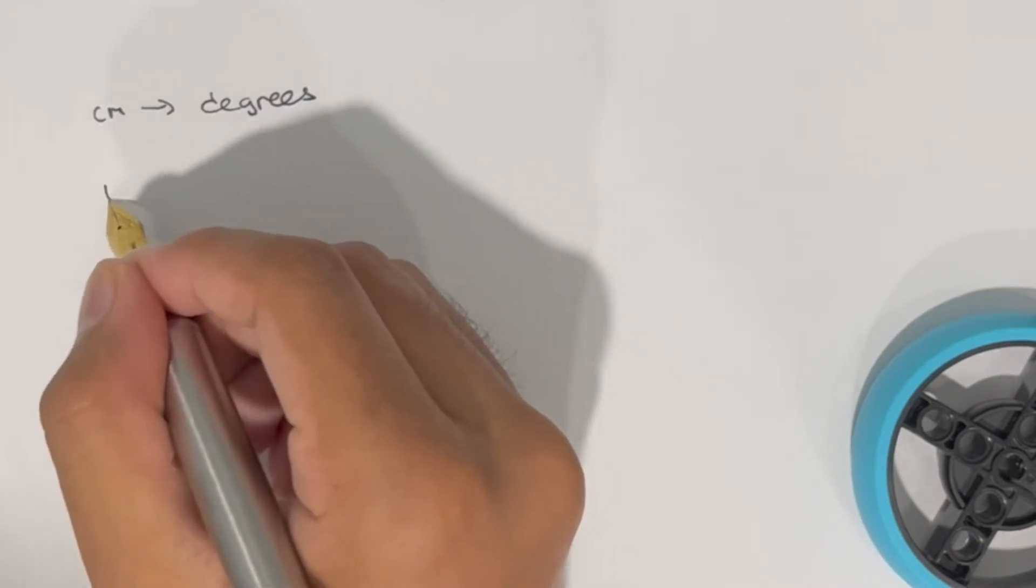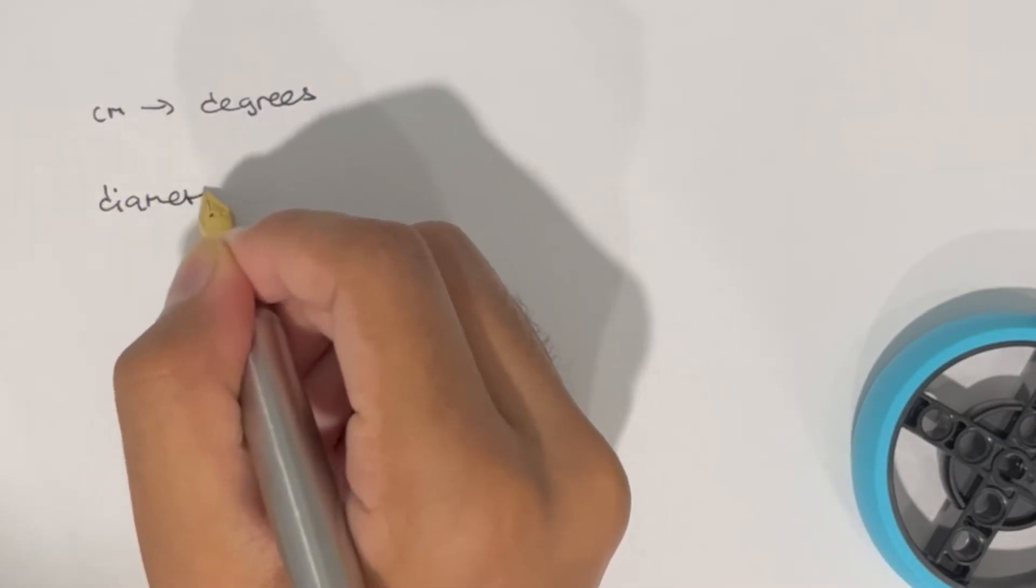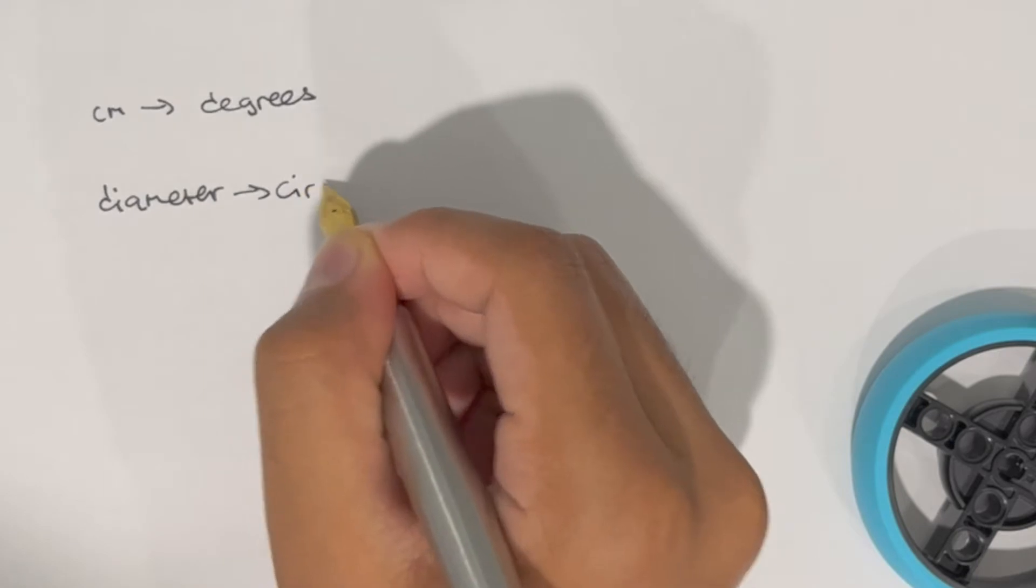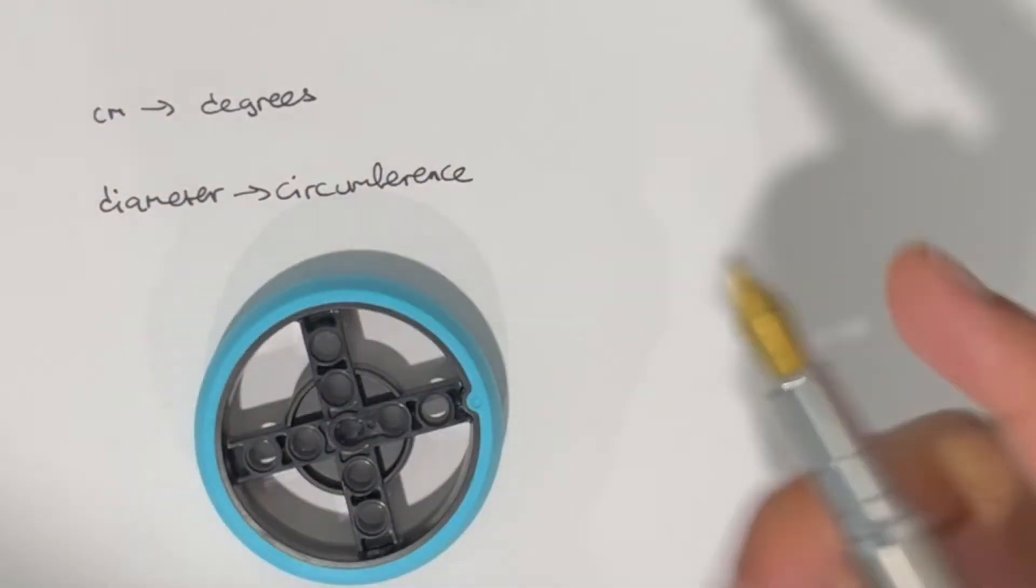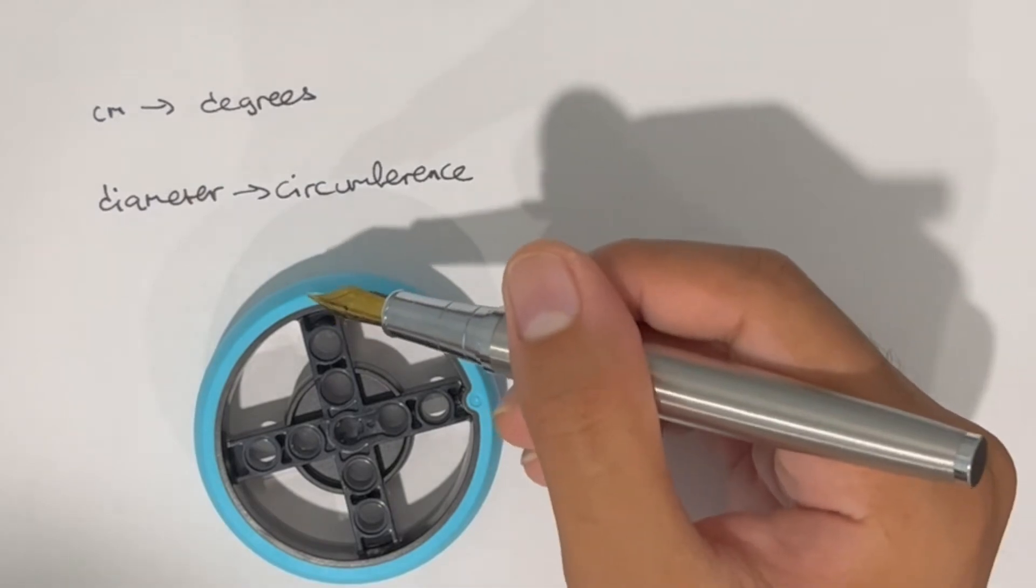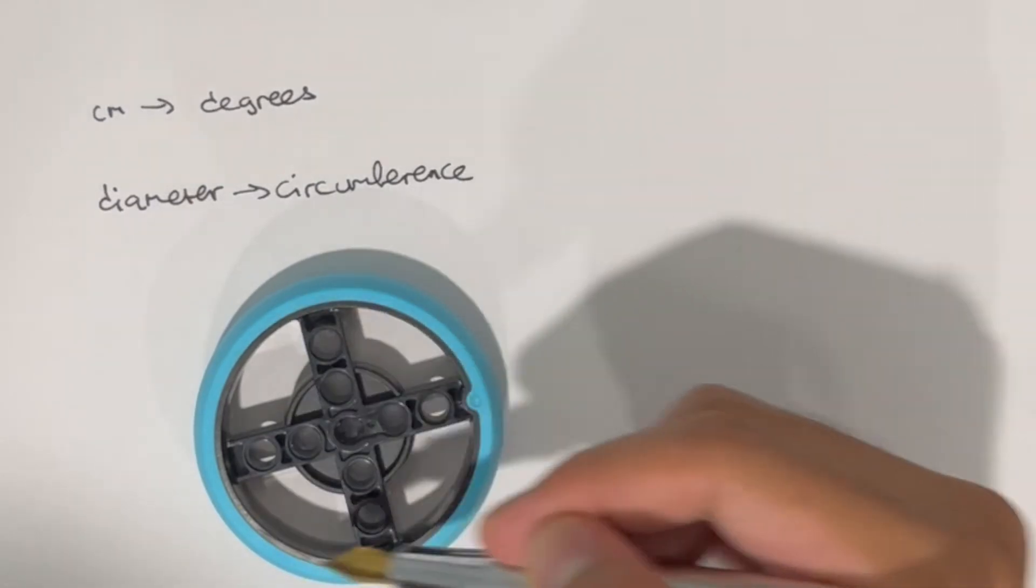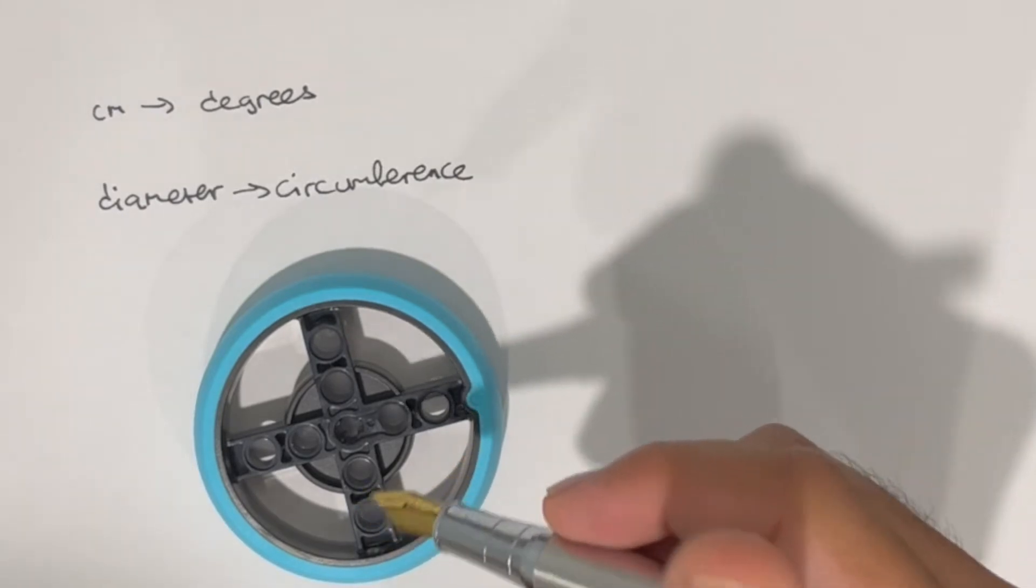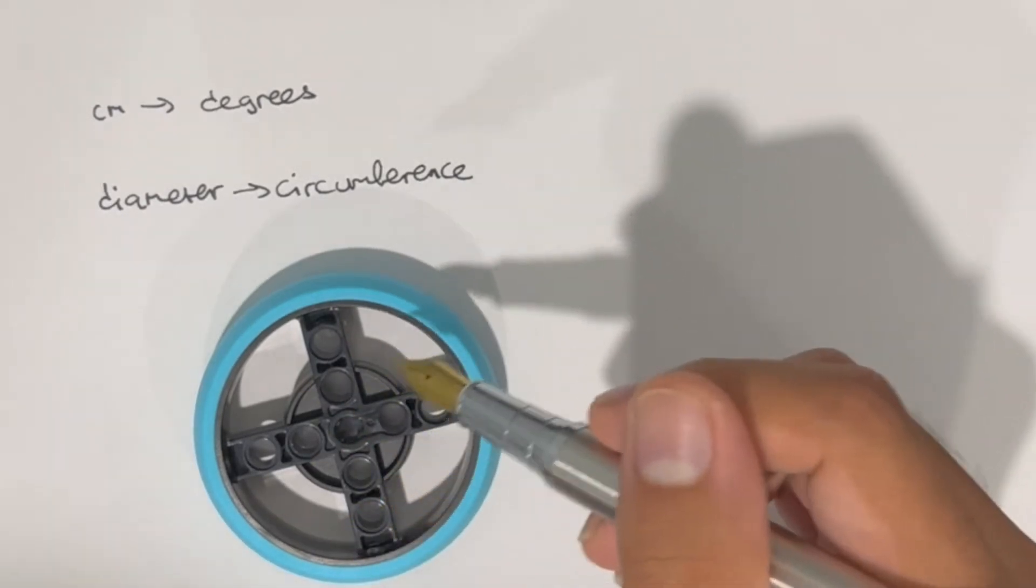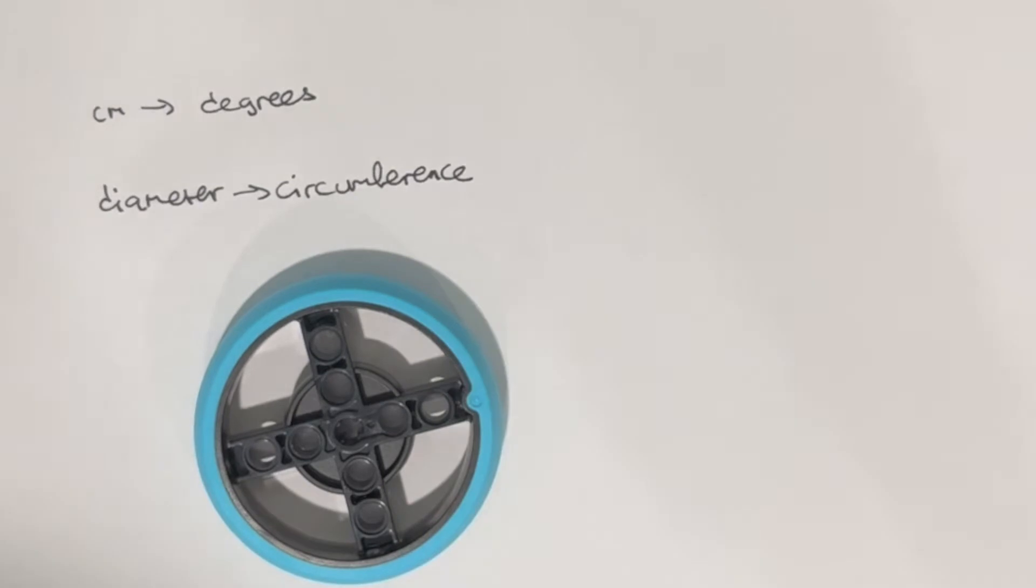I'm going to find the diameter of my wheel and convert it to circumference, which is the distance around the wheel. In this case here, the diameter would be from here to here, and the circumference would be the distance around like this. The circumference is relevant because when the motor spins 360 degrees, the wheel is going to travel the distance of the circumference.